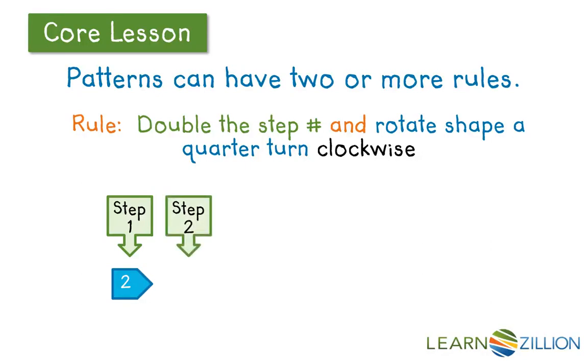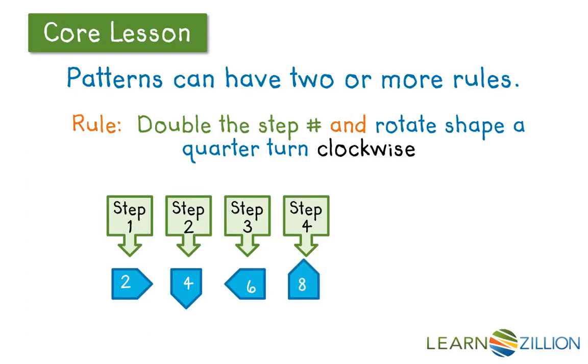Step 2, I double the 2 and I get 4, but I haven't done the second part of the rule, which is rotate the shape a quarter turn clockwise. It needs to rotate. Step 3, I double it, 6, and it rotates. Step 4, double 4, get 8, and it rotates.